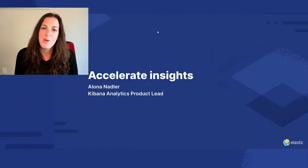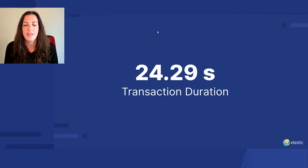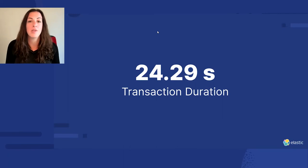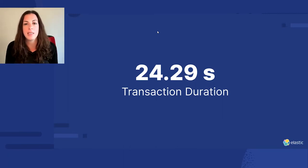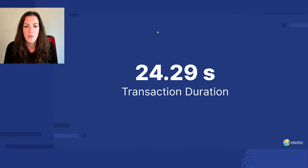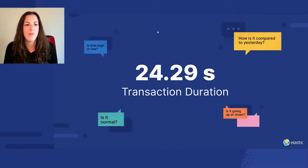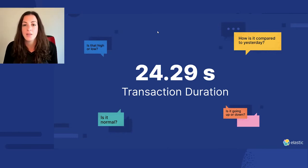I'm using APM data — Application Performance Monitoring — which monitors my application and shows me what my users are experiencing and what's going on inside my application. I see this metric: 24 seconds. A few questions come to mind. Is it high or low? It seems to be high, but maybe it was always like that. How does it compare to yesterday? Is it going up or down? Is it normal? To answer those questions, I'm going to jump into Kibana.